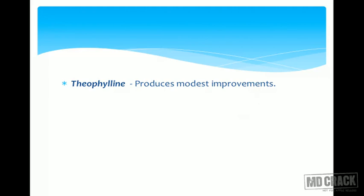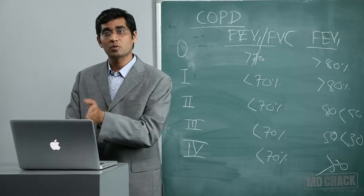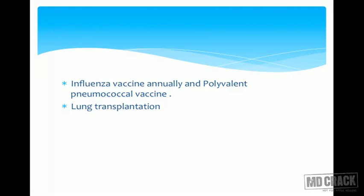Theophylline, used alongside beta-2 agonists or anticholinergics, shows some modest improvement. N-acetylcysteine, despite proven mucolytic and antioxidant properties, has failed to show significant benefit on COPD outcomes. Augmentation therapy with IV alpha-1 antitrypsin is indicated only in patients with severe deficiency plus abnormal pulmonary function tests or abnormal chest X-ray or CT scan. For prevention, COPD patients should receive annual influenza vaccine and polyvalent pneumococcal vaccine.